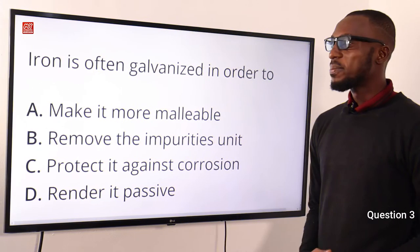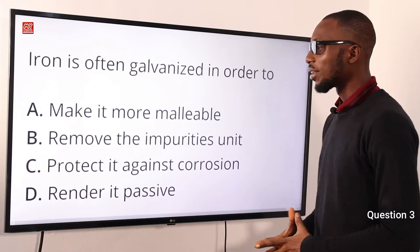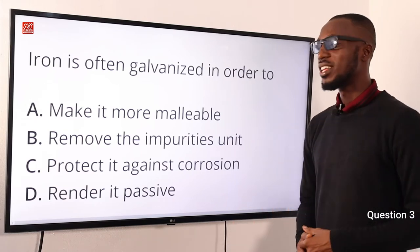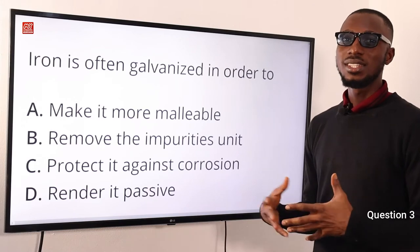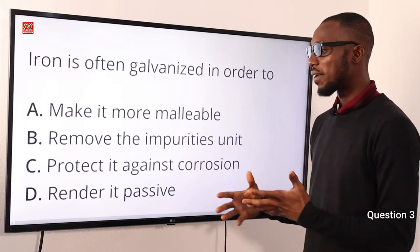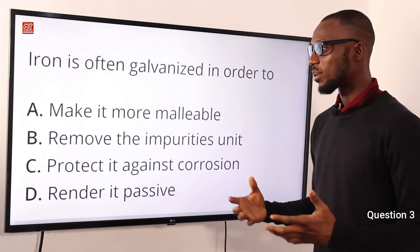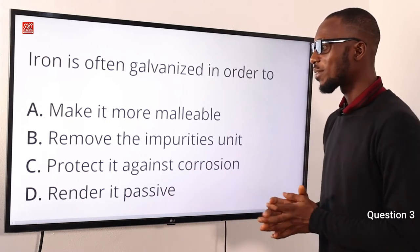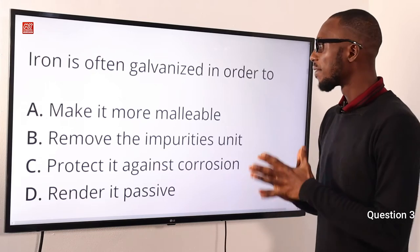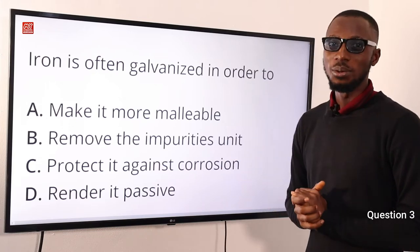Number 3. Iron is often galvanized in order to do what? When you talk about galvanization, you are coating iron or steel with zinc. This is to prevent corrosion or to protect it against corrosion. The correct option is option C — iron is often galvanized in order to protect it against corrosion.